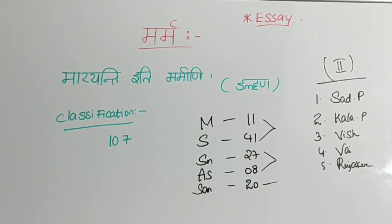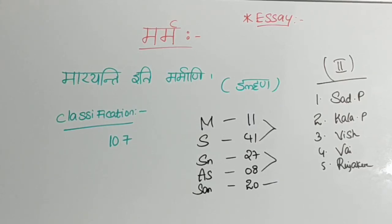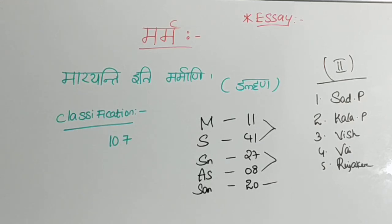Marma is also defined as the place where an injury leads to Vishama Spandana — that is irregular pulsation — Pida, that is physical and mental grief, and Ruk, that is pain which a person is afflicted with. Regarding Marma, Sharangadara has mentioned: Marmani Jeeva Adharani Prayena Munayoh Jaguhu, meaning Marma is a seat of life.